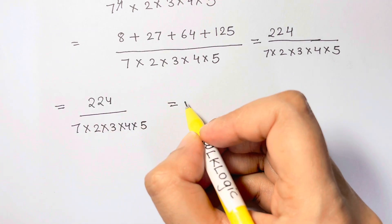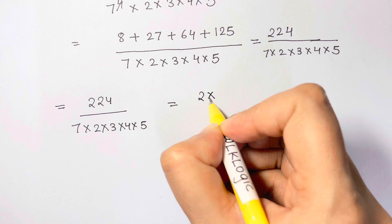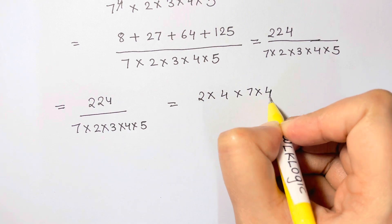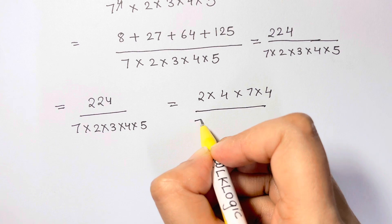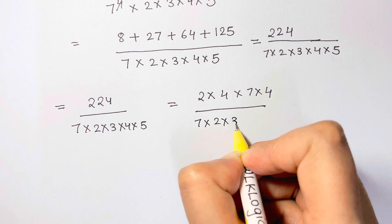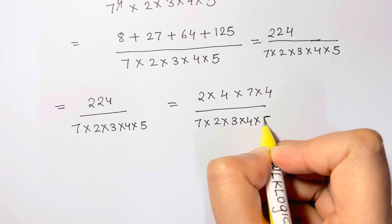224 can be written as 2 times 4 times 7 times 4 over 7 times 2 times 3 times 4 times 5.